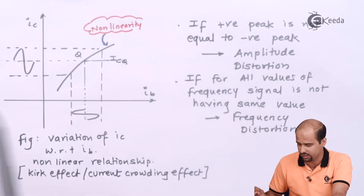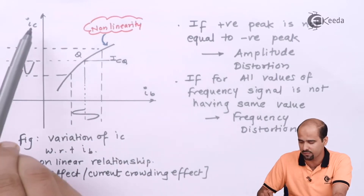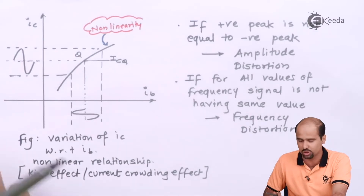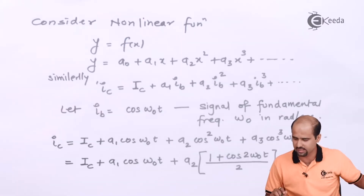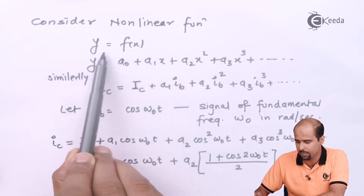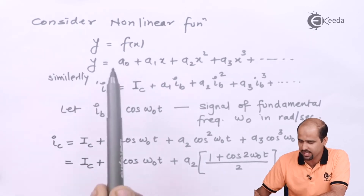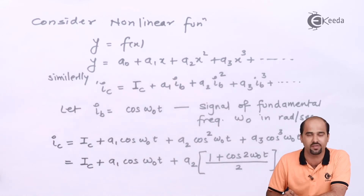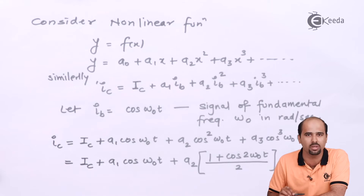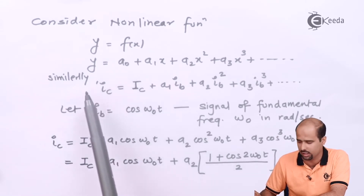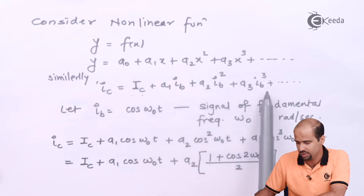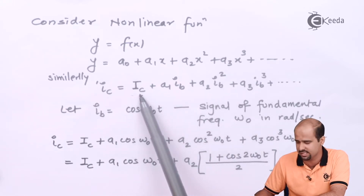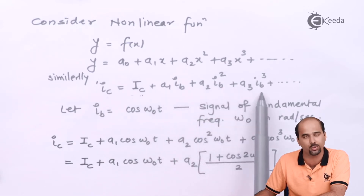Now let us understand mathematically how this graph shows the distortion in terms of the IC and IB non-linear relationship. This is called non-linear distortion that occurs in class A and class B power amplifiers. We consider Y as a function of X, and I can write IC in terms of polynomials when talking about non-linearity. IC — capital, that is DC IC — equals DC IC plus A1·IB plus A2·IB² plus A3·IB³ and so on. I am adding all the harmonics of IC in the form of IB.